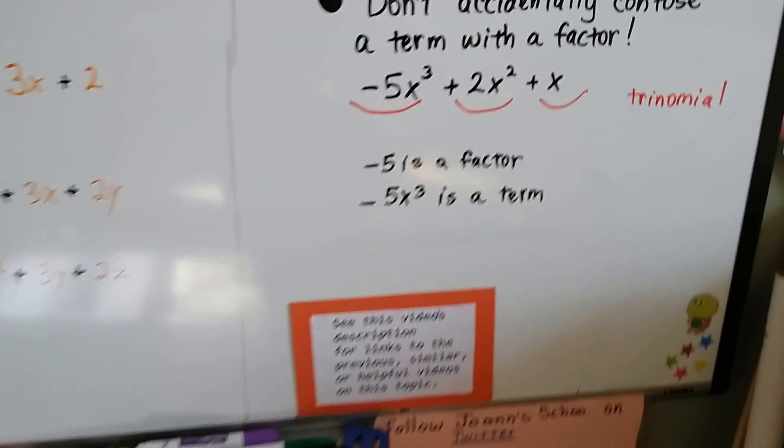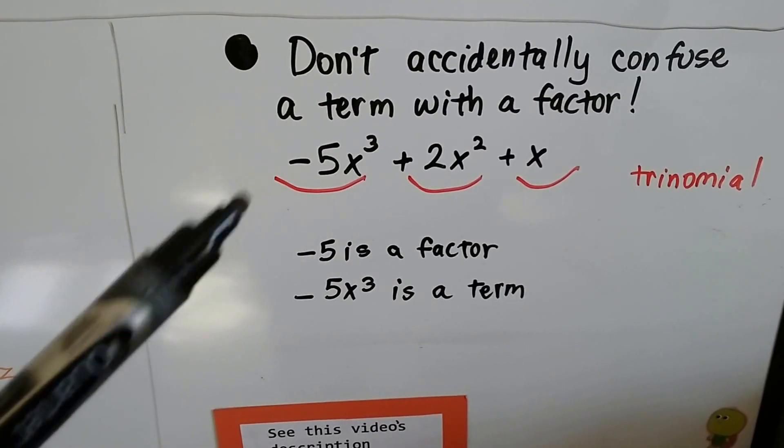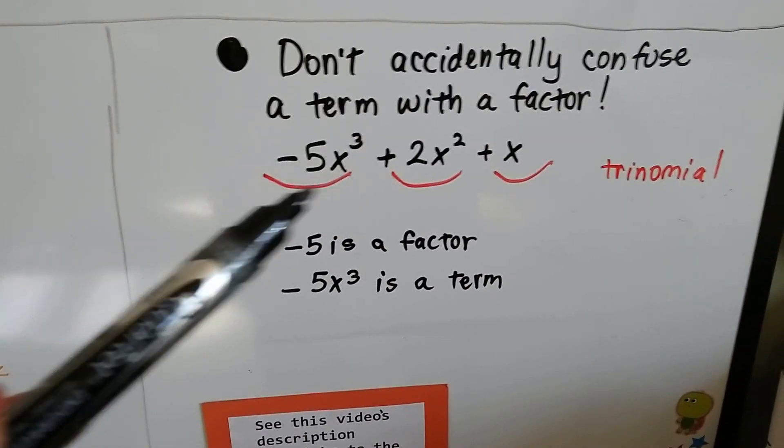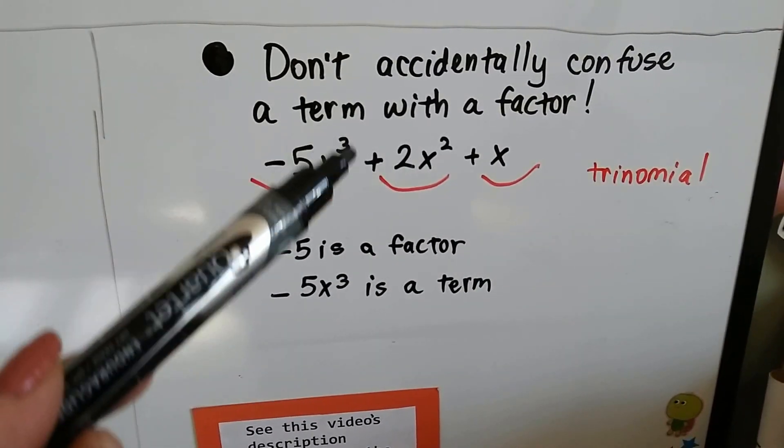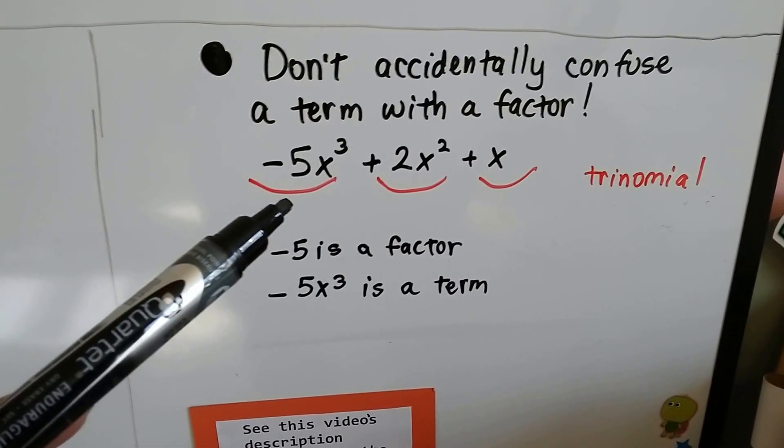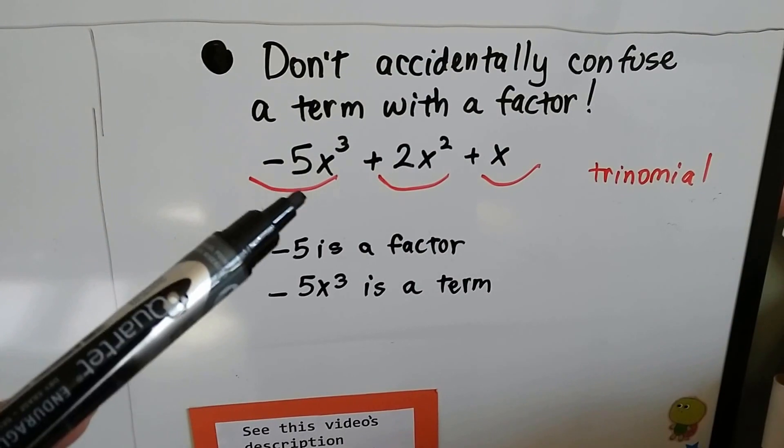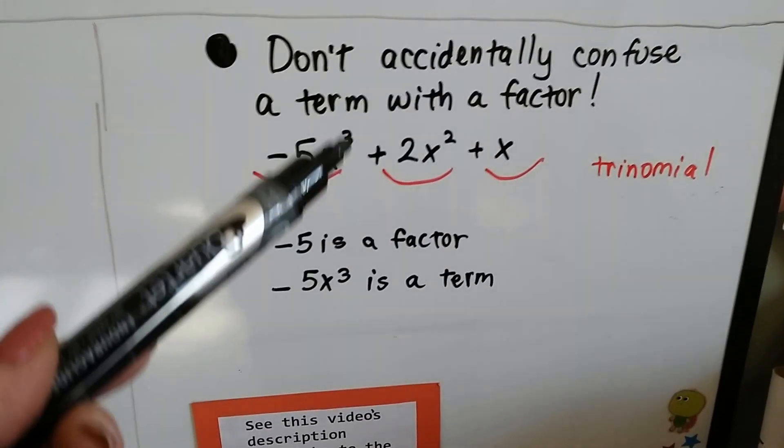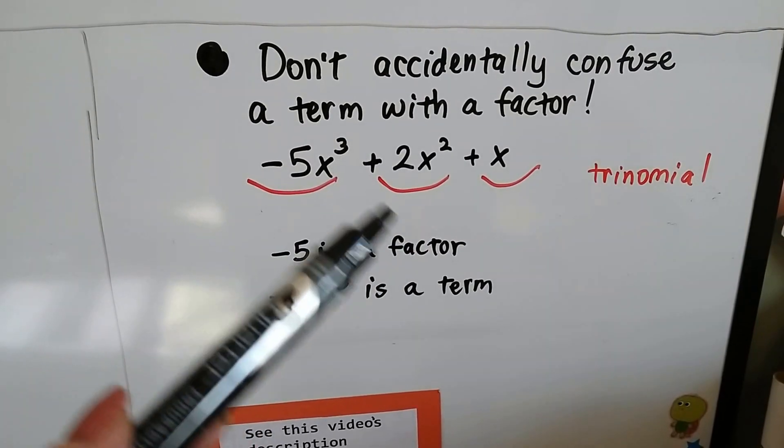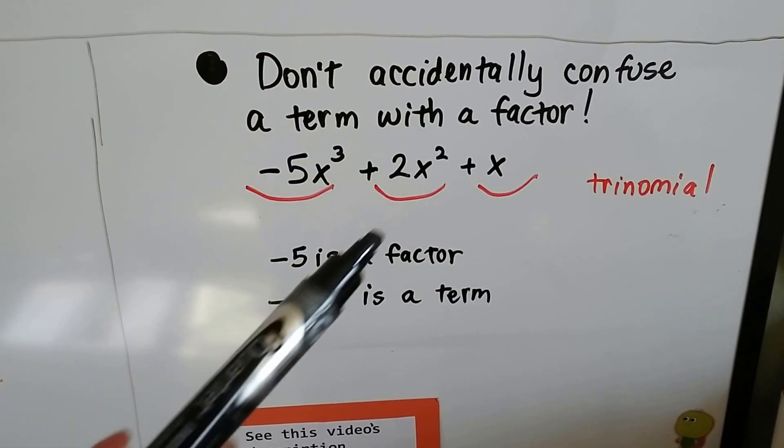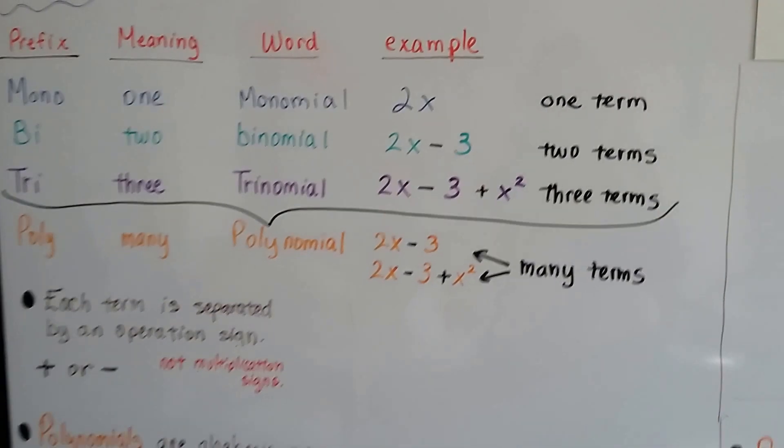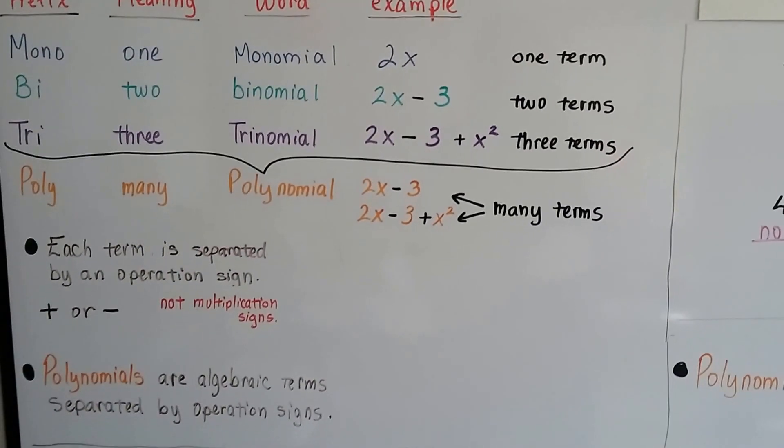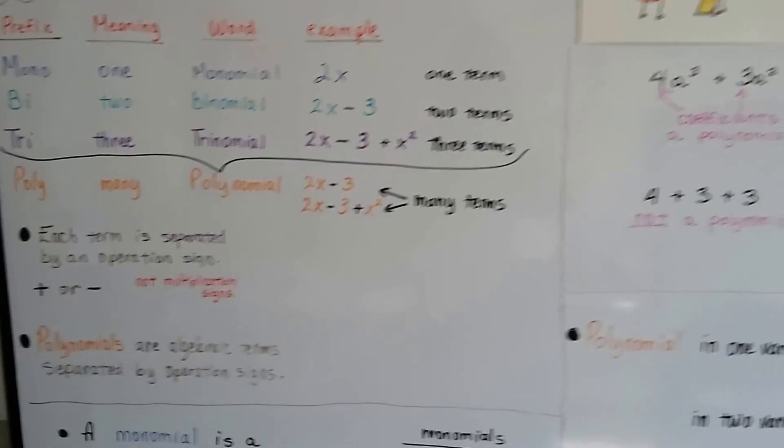Now, don't accidentally confuse a term with a factor. This negative 5x to the third power is one term. This negative 5 is a factor to the x to the third power, but together it's a term. So that's why I said multiplication doesn't count, because this is negative 5 times this x to the third power, isn't it? So, all together it's one term. It's going to be separated by a plus or a minus sign. So this is a trinomial, we got a term here, a term here, and a term here. We know trinomials have three terms, we know binomials have two terms, monomials have one term, and they're all polynomials. And they're all separated by a plus or a minus sign.